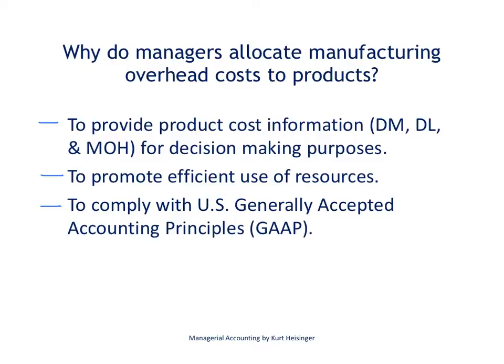Let's do a quick review of what we mean by manufacturing overhead costs. Manufacturing overhead costs are all product costs other than direct materials and direct labor — they are the product costs that are not easily traceable to products. Examples include rent on the factory, utilities on the factory, indirect labor related to production, and indirect materials that go into production.